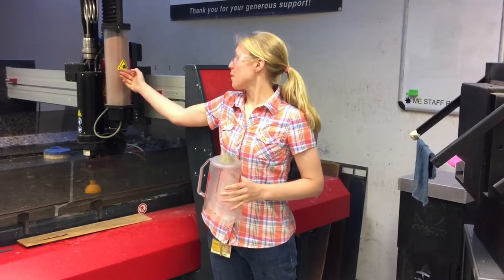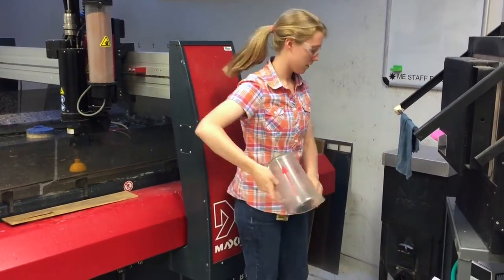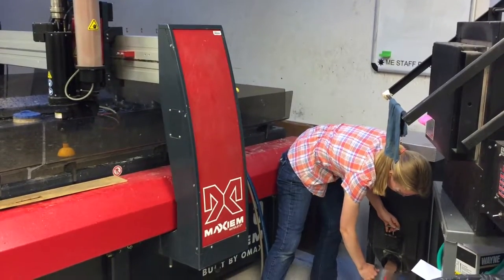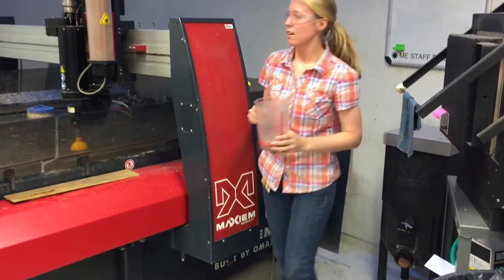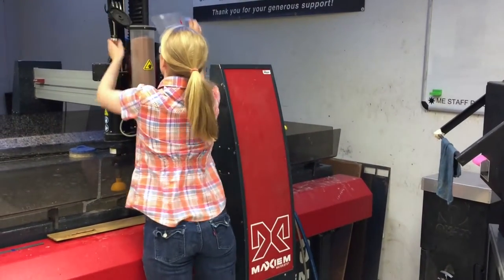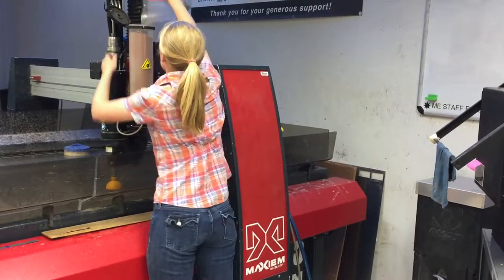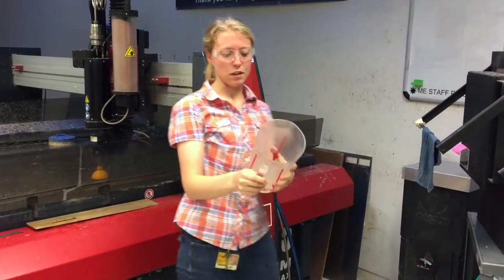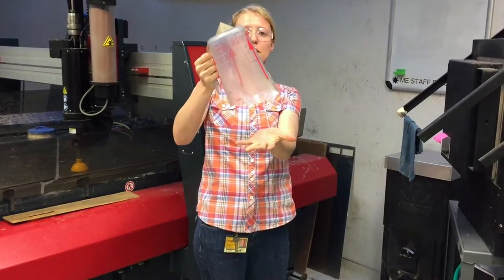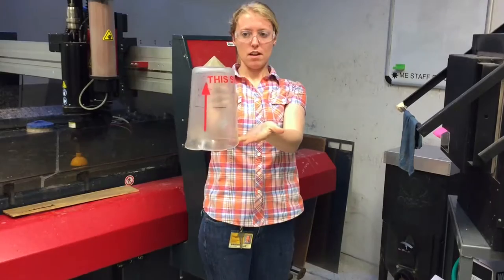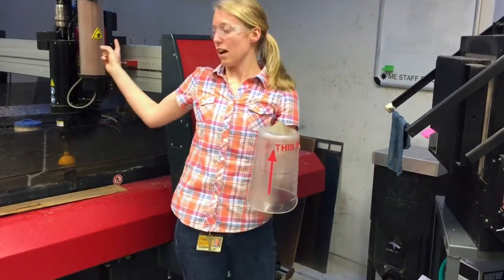If you see that the garnet hopper is low before you start a job, use this pitcher and put garnet into it. Flip up the top of the hopper, and pour it in. Make sure when you're finished putting garnet into the hopper, always keep this pitcher with this side up. If water gets into the pitcher, it can cause the garnet to clump together and clog in the machine.